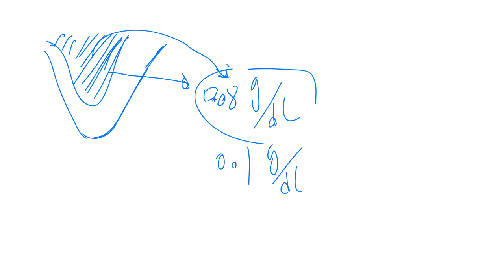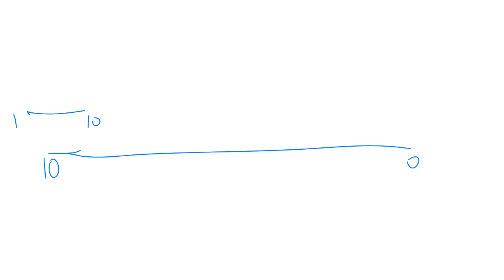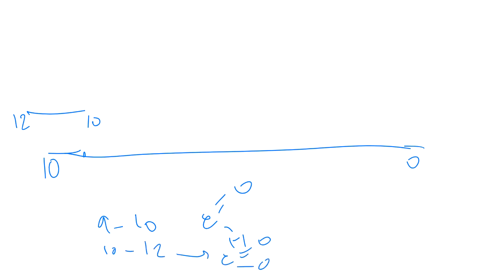For NMR, the scale runs from 0 to 10, with a region of 10 to 12 out of scale. A peak between 9 and 10 indicates an aldehyde. A peak between 10 and 12 indicates a carboxylic acid. A crowded peak between 7 and 8 indicates an aromatic ring. These three regions are very useful for process of elimination when matching NMR spectra to compound choices.